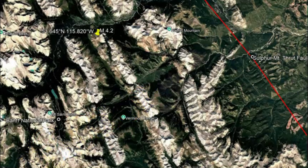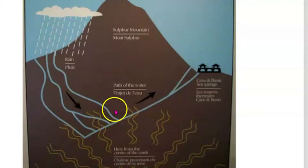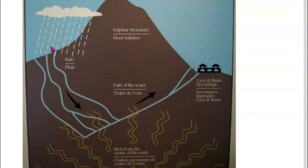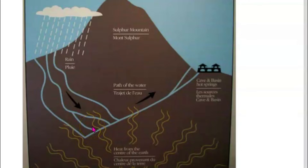There is an image showing Sulphur Mountain, illustrating how rain and snow fall on the western side of the mountain, percolate down into the crust of the earth, and then come up on the western side where the Sulphur Mountain thrust fault zone is, creating these hot springs.